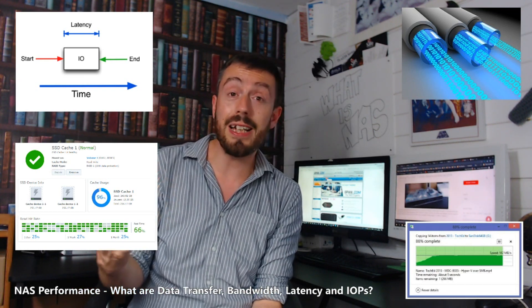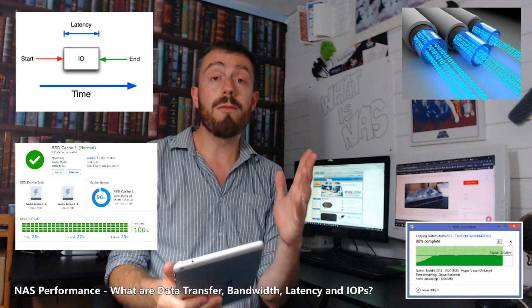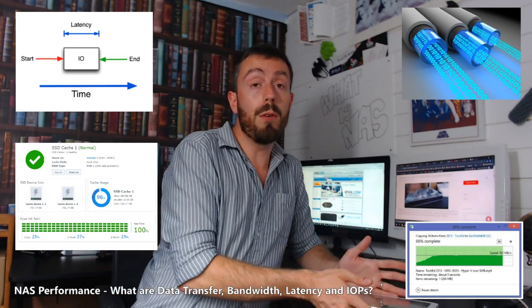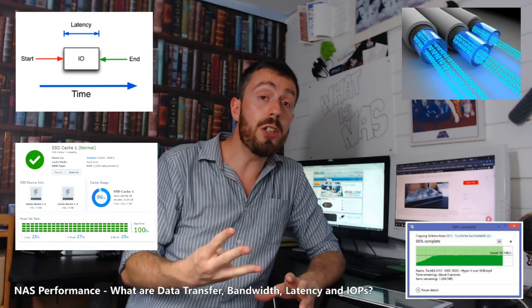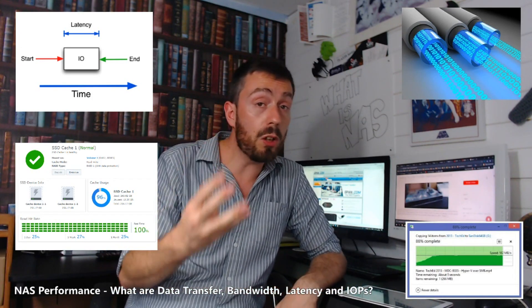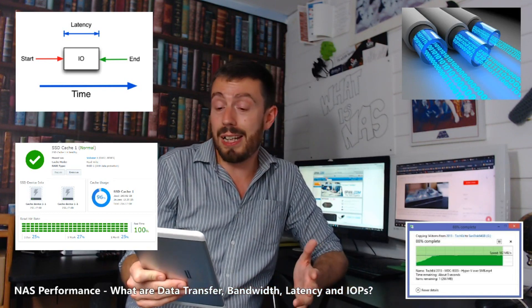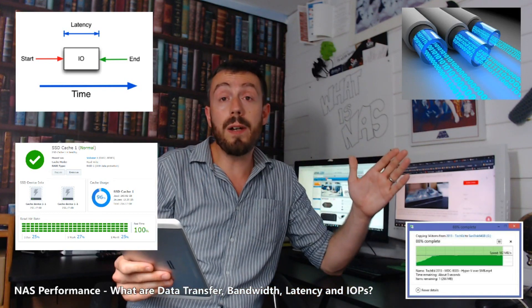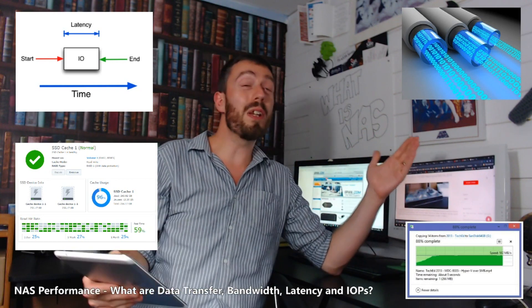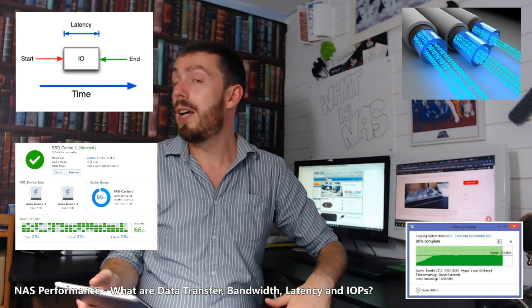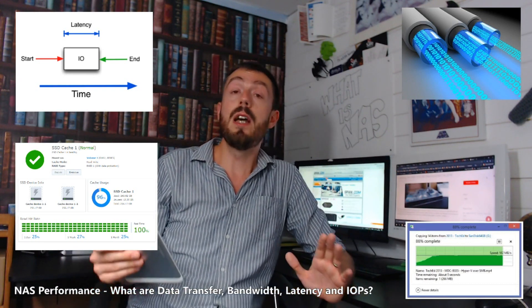So input/output per second — the number of individual operations — those are the four main measurements of data storage for NAS, DAS, and more. They're the four benchmarks you should be looking for when buying any data storage device. You want your data transfer as high as possible, your bandwidth as high as possible, but your latency as low as possible, and your IOPS right up there in the hundreds and thousands.